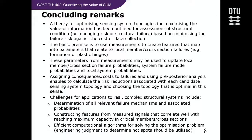The basic premise is to use measurements to create features that map into parameters relating to local member or cross-section failures — for example, information on plastic hinges — and then connect those to probabilities of failure. These parameters from measurements may be used to update local member cross-section failure probabilities, system failure mode probabilities, and finally total system failure probability. Consequences or cost are assigned to failures and pre-posterior analysis is used to calculate risk reductions associated with each candidate sensing topology, choosing the topology that is optimal.